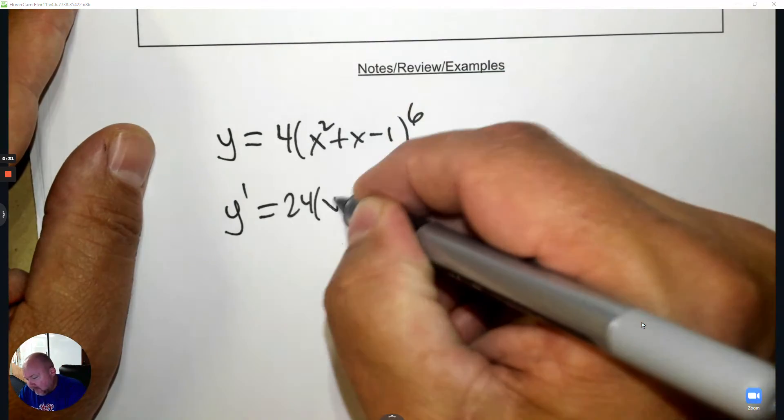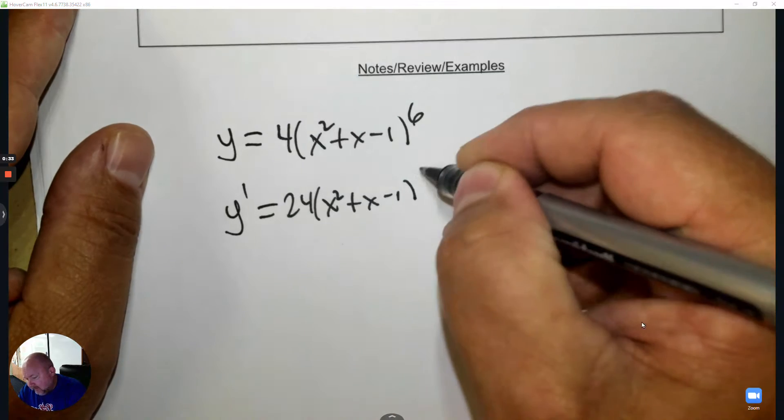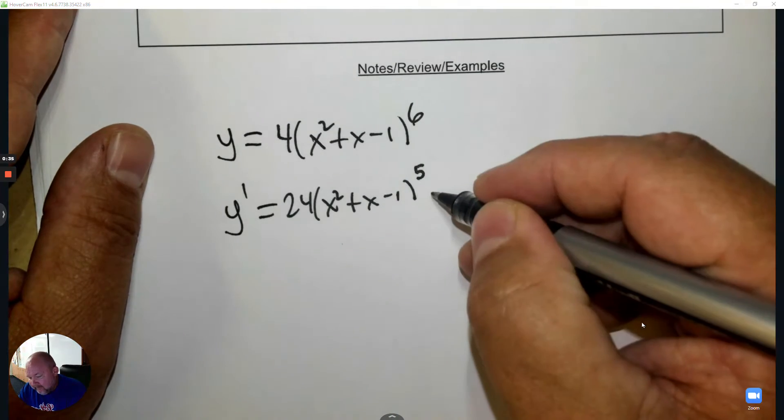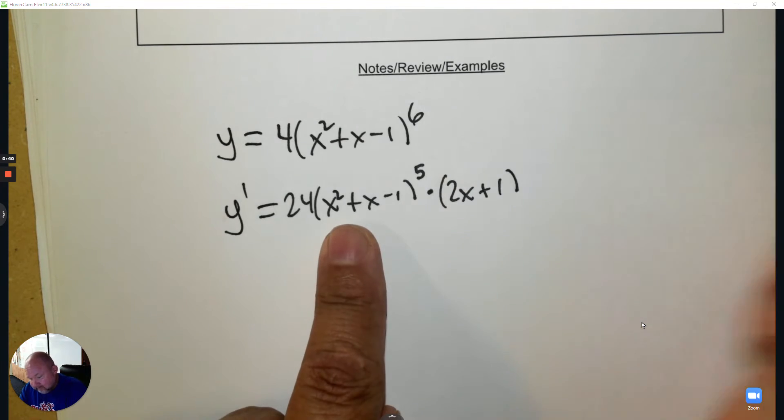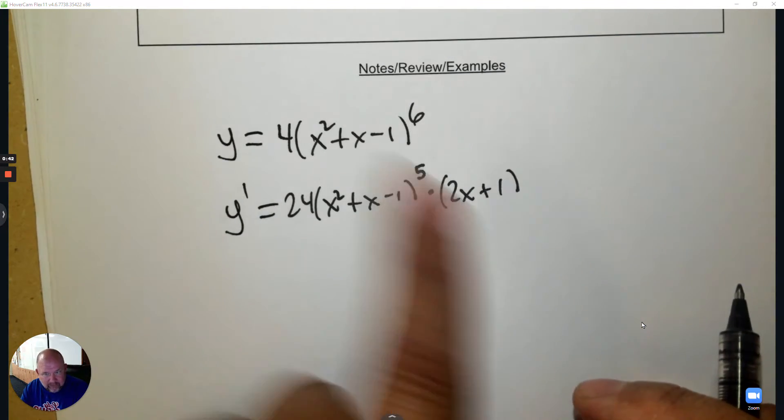6 times 4 is 24. Copy the base down, subtract 1 to the exponent, and then the hook is the derivative. Now put parentheses around it, and that's the hook that makes the chain.